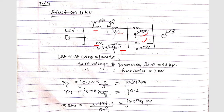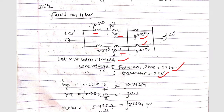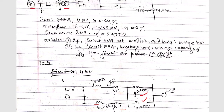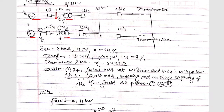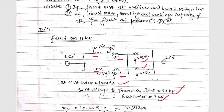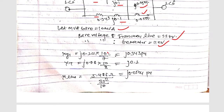In order to calculate these parameters, let's assume a base of 10 MVA. The base voltage at the transmission line will be 33 kV, and the base voltage at the generator side will be 11 kV. Now xg1 is calculated as: the old x value is 24%, so 0.24, multiplied by (new MVA / old MVA) = 10/7. This gives xg1 = 0.343 per unit.